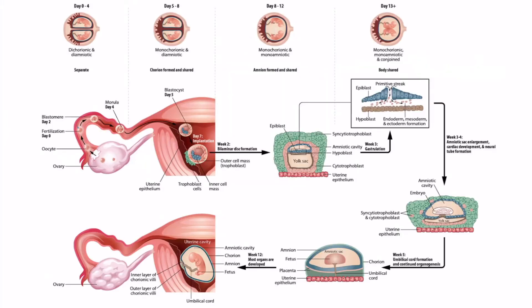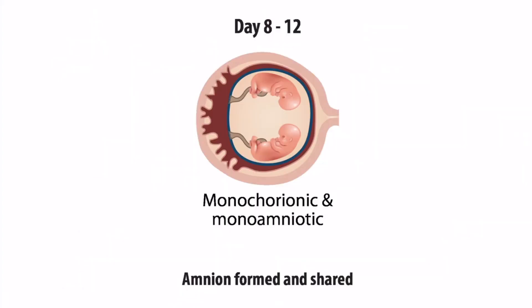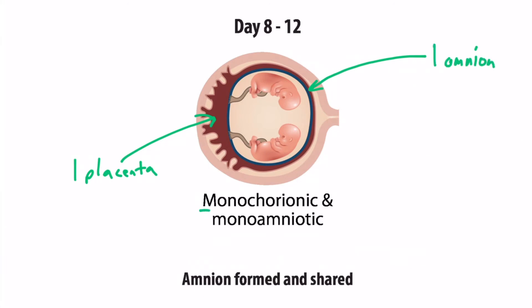Now let's look at the third period — the A in SCAB — where the amnion is formed and therefore shared. It's during this stage that the bilaminar disc forms, and when it forms, the amnion forms as well. You can see the amniotic cavity here. If the embryo splits here, each embryo must share that same amniotic cavity, so they will be monoamniotic. In addition, the trophoblast and chorion have already formed, so they will also share the placenta, making them monochorionic. Zooming in, we can see one placenta and one amnion. This type of twinning — monochorionic and monoamniotic — occurs at days 8 to 12.